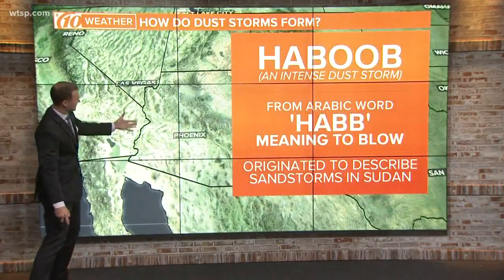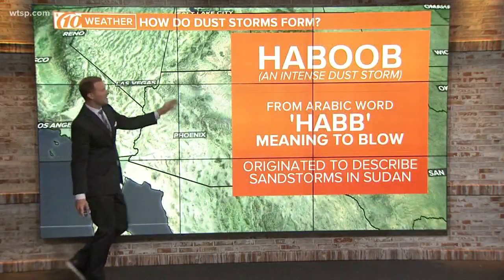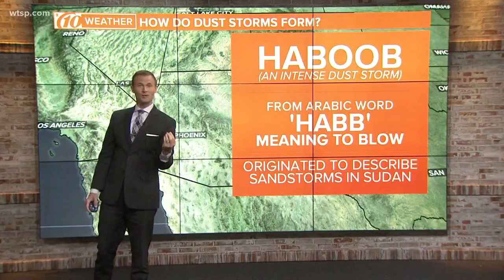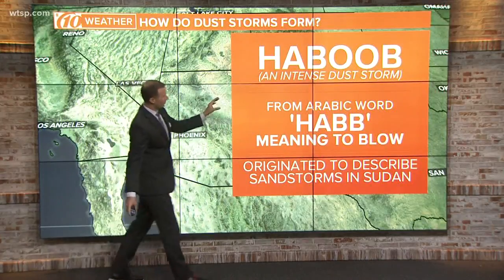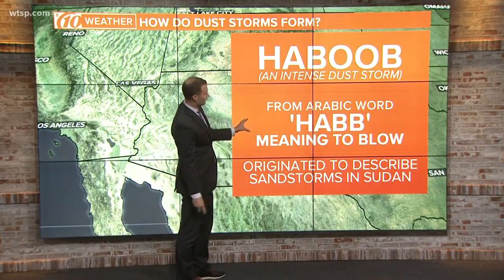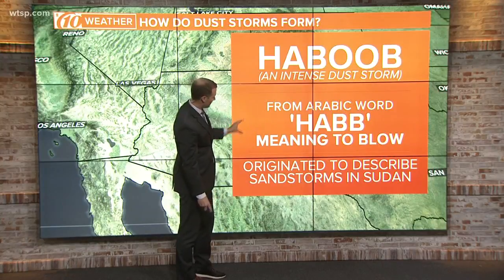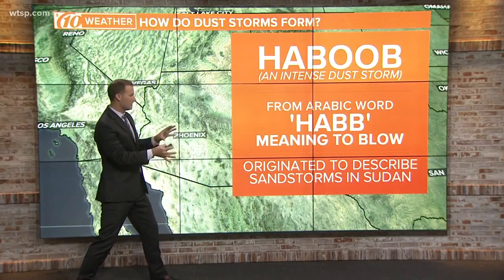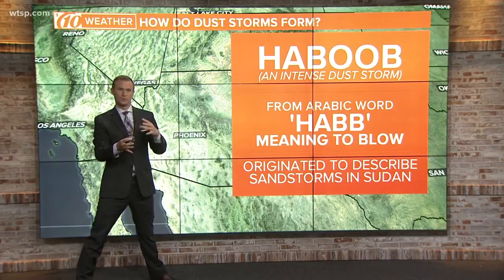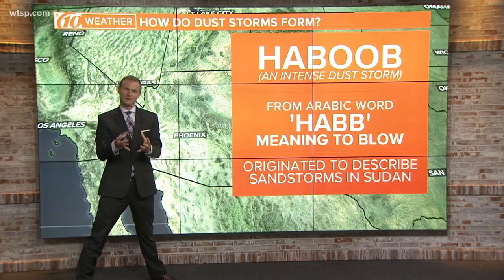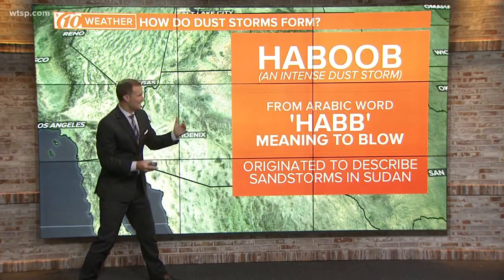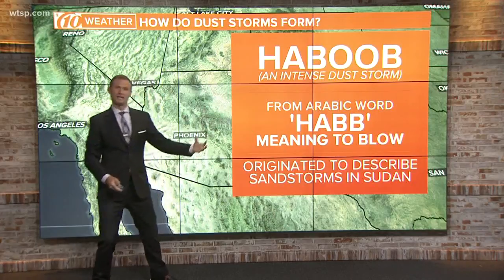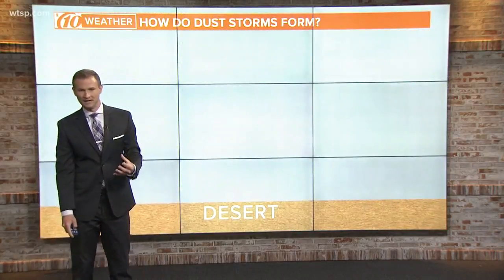Let's take you down to the desert southwest where they typically develop. In addition to being called sandstorms, the real strong ones are called haboobs, actually originating from the Arabic word for wind, or originating from how sandstorms were described in Sudan.